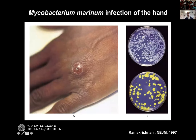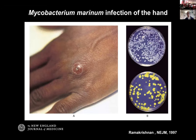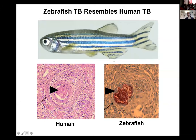Mycobacterium marinum was rediscovered about 30 years later as the cause of fish tank granuloma, aquarium tank granuloma, or swimmer's granuloma in humans. In humans it causes a peripheral disease because we're warm-blooded — it can only survive in the cooler, extremity parts of our body. Biopsies of these lesions show granulomas that look for all the world like TB. This seemed like a really nice model, particularly because we could interrogate this disease using zebrafish, which already get TB with Mycobacterium marinum.